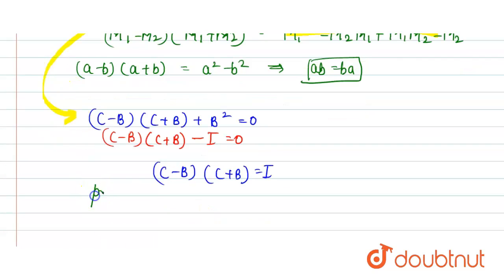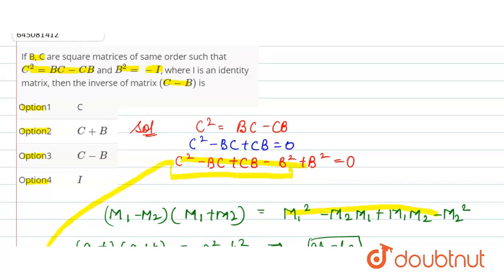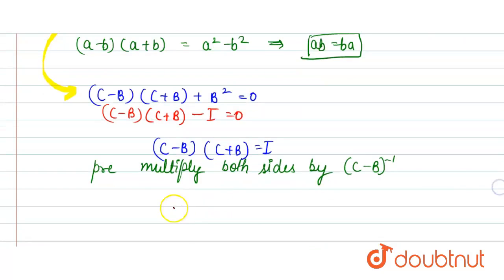Now here pre-multiply both sides by C minus B inverse, because in the question we have to find the value of inverse of C minus B. So here when we multiply this by C minus B inverse, C minus B into C plus B is equal to I into C minus B inverse.